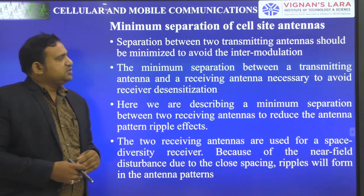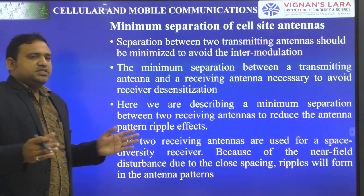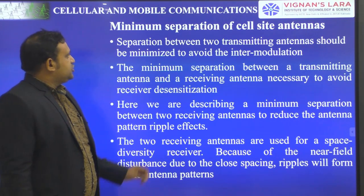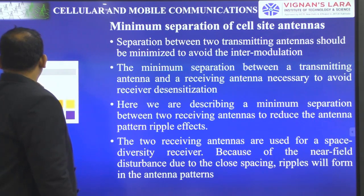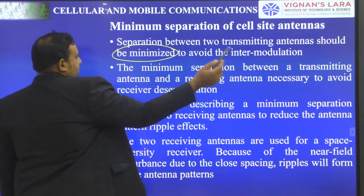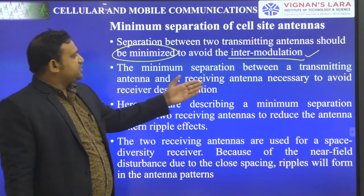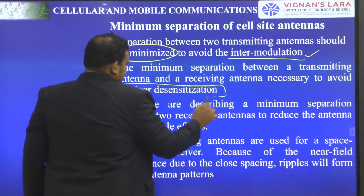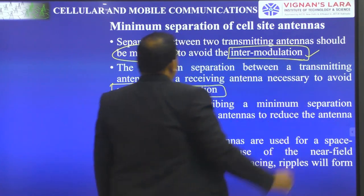The third topic in this video lecture is the minimum separation of cell site antennas. We will discuss the separation between cell site antennas and what is the minimum separation required. The separation between two transmitting antennas should be minimized to avoid intermodulation products. This is the first important parameter.